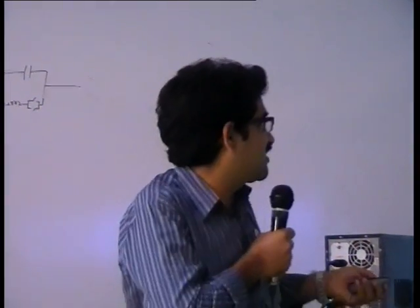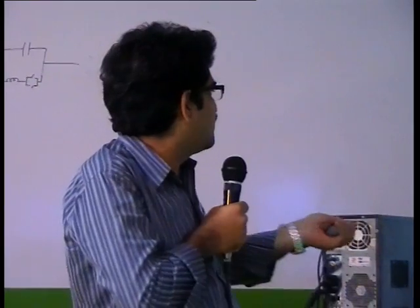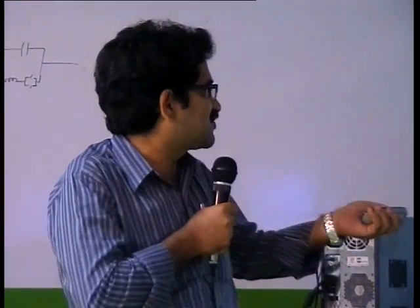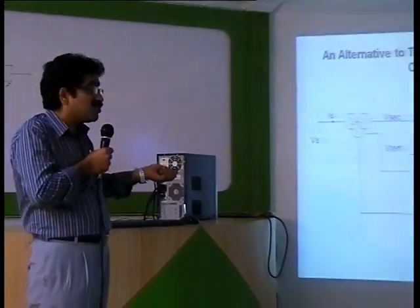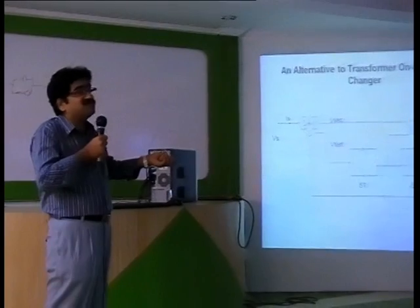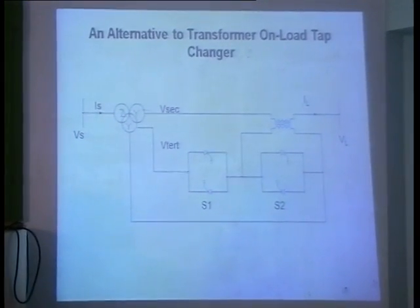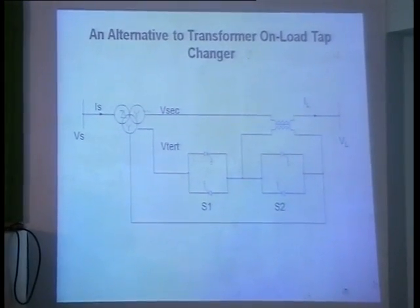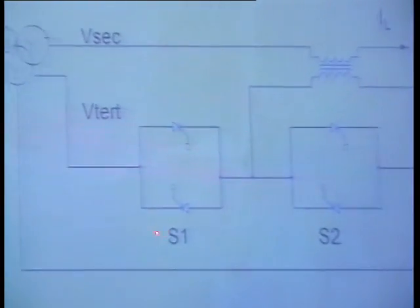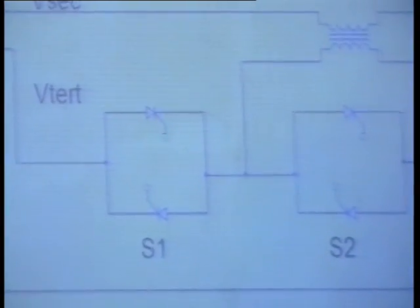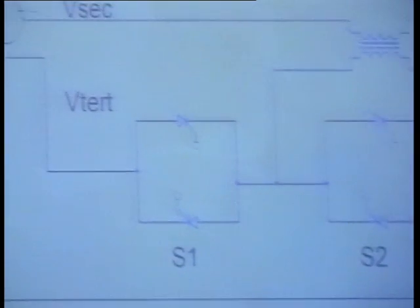Such a situation arises in my booster transformer. The primary always has load current flowing. On the secondary, whenever I keep the switch open, I should keep the switch closed so that my secondary is in a shorted condition. These two are complementary switches: when S1 is on, S2 is off; when S2 is on, S1 is off.